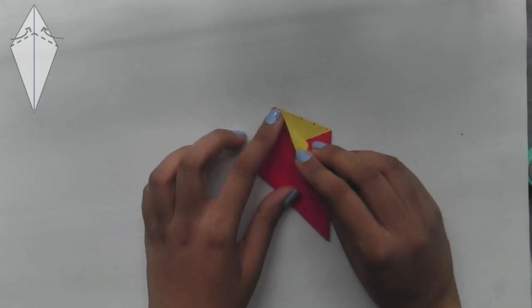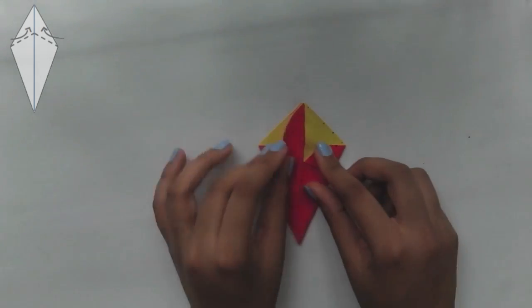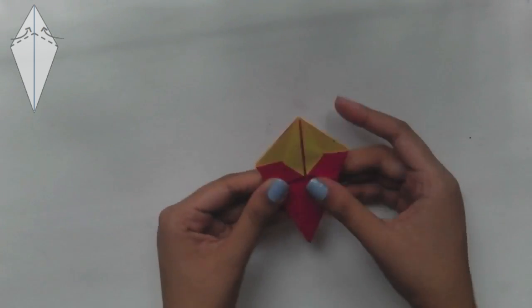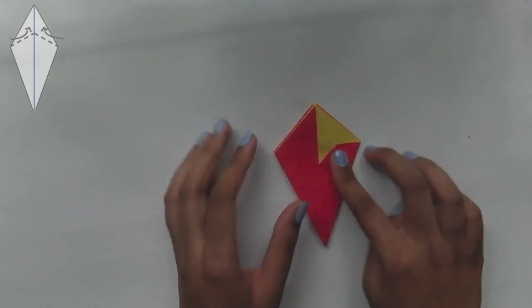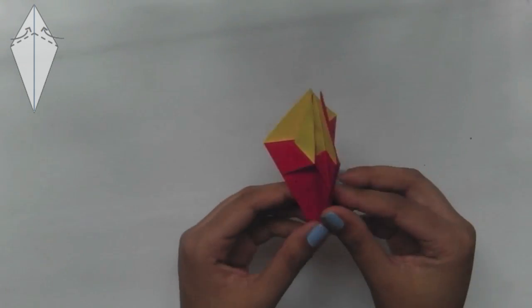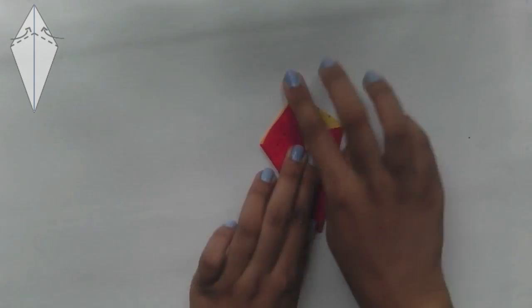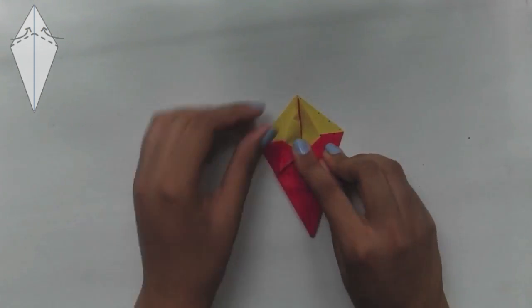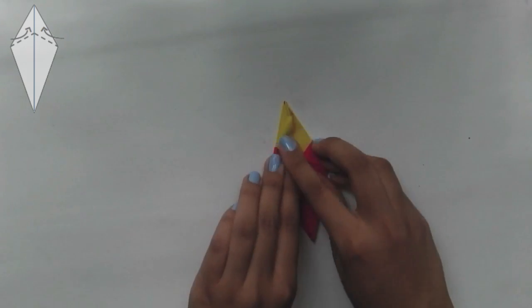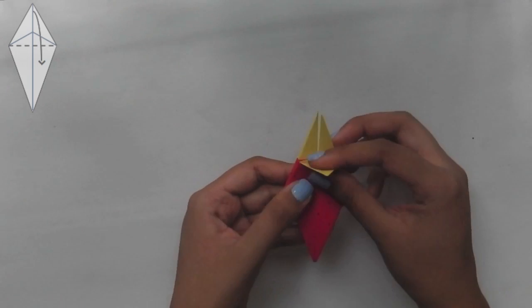Where it opens up fold the flap to the middle. Repeat this on the other three sides. Then fold the top down and repeat on the other three sides.